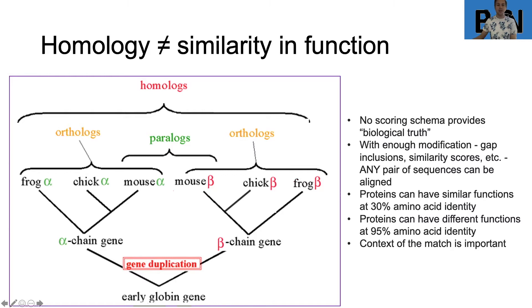There's no biological truth in homology, just biological testing we can do going forward. With enough modification — if we change gap scores and lower our threshold of similarity — any pair of sequences can be aligned, even if it doesn't look good. Particularly problematic for protein sequences is that you can have proteins that are 80% similar to each other yet have the same function, or proteins that look almost identical to each other but have different functions — both problems borne out by the paralog-ortholog scenario.